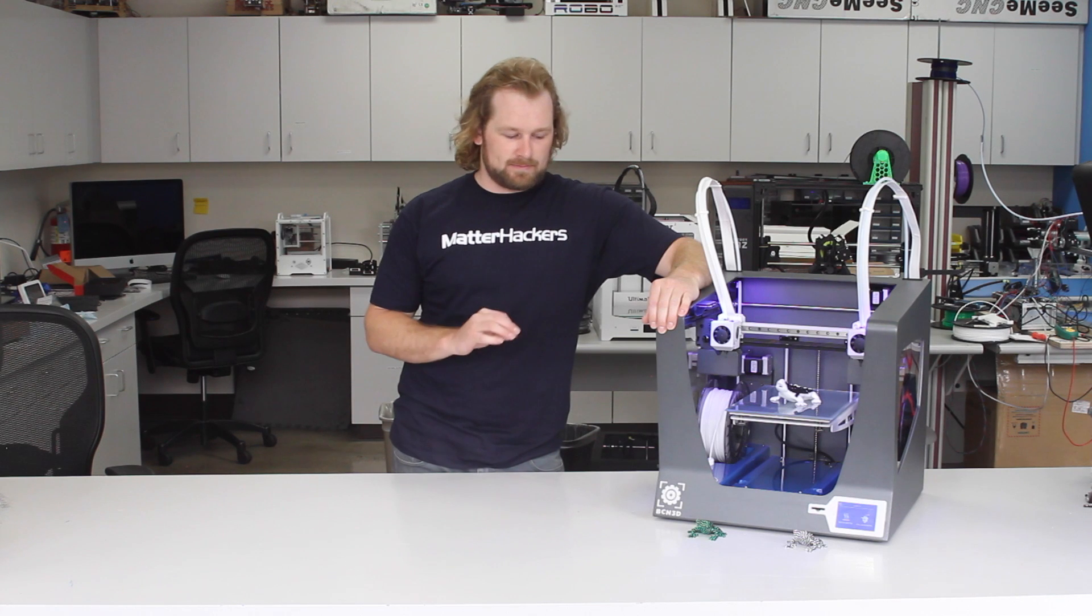If you're looking to get into dual extrusion, the BCN 3D Sigma is really the place to start. With its independent dual extruders, some of the best quality prints we've gotten dual extrusion-wise. To order one, and to keep up with everything 3D printing, go to MatterHackers.com.